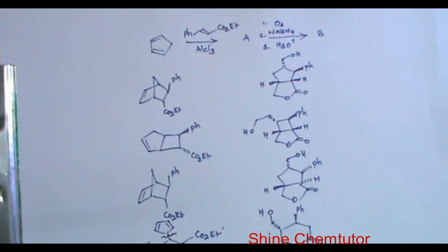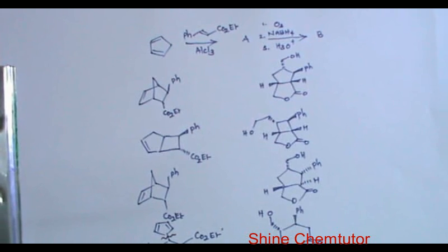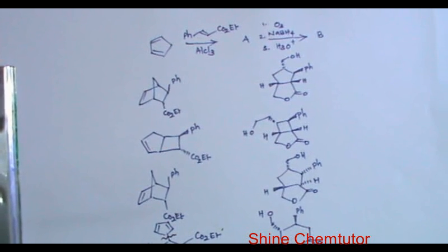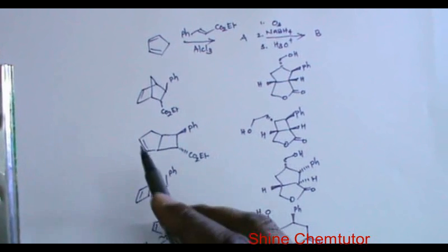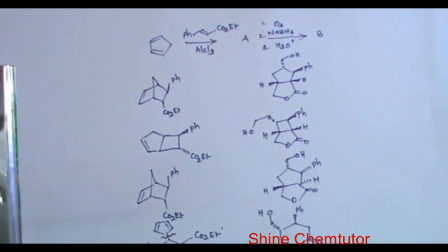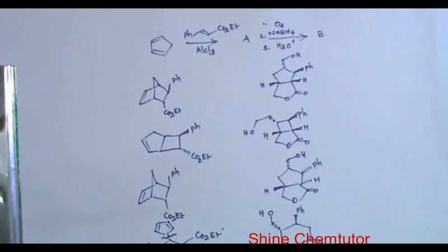Compound A is subjected to ozonolysis. Generally, alkene and alkyne will be subjected to ozonolysis. Here, in all the options, we have an olefin — a double bond — that will be subjected to ozonolysis to give the corresponding ozonolysis product.